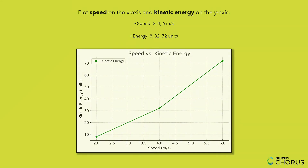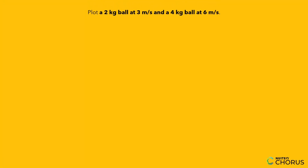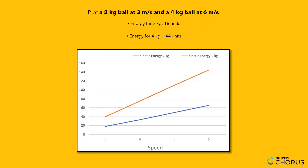Finally, let's combine mass and speed. Imagine a 2 kg ball at 3 meters per second versus a 4 kg ball at 6 meters per second. Energy for 2 kg: 18 units. Energy for 4 kg: 144 units. This graph shows both linear and exponential trends. Engineers use similar graphs to design safer highways and faster roller coasters.